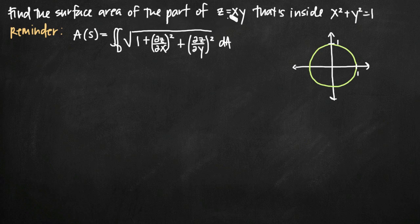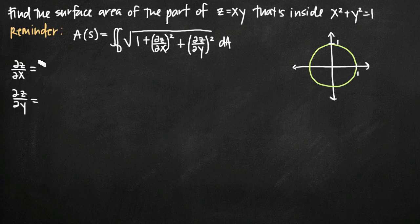Because we're finding the surface area of z equals xy, we want to take partial derivatives of this function. We'll use x squared plus y squared equals 1 to find the bounds — our limits of integration — because the surface is bounded by that circle. When we take the partial derivative with respect to x, we treat x as the variable and y as the constant, so y is just a constant coefficient and the partial derivative with respect to x is simply y. The partial derivative of z with respect to y is similarly just x.